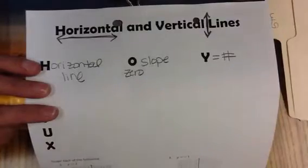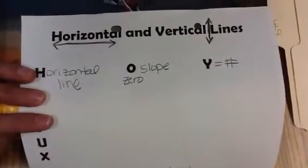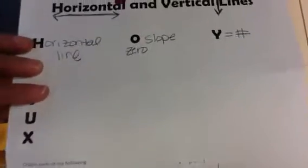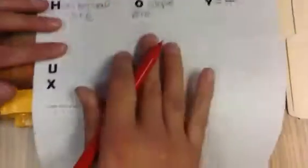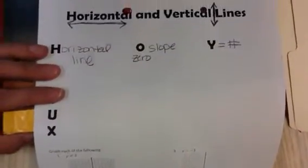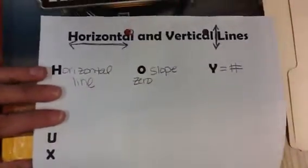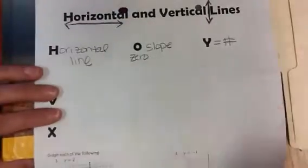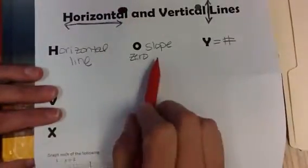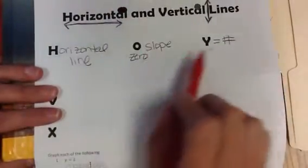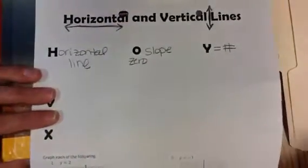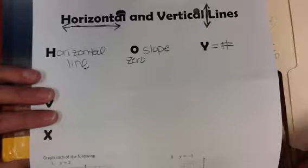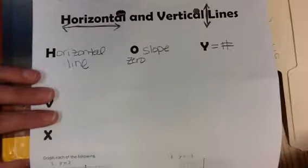There's no Y equals NX plus B for horizontal lines — it's just Y equals a number. Every horizontal line has a slope of zero and Y equals a number. So H-O-Y: Horizontal, zero slope, Y equals a number.